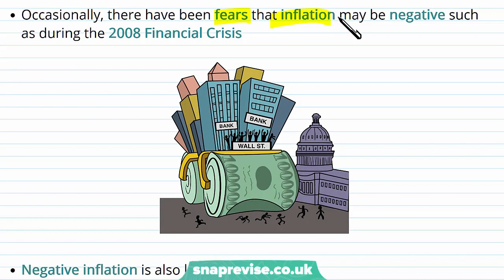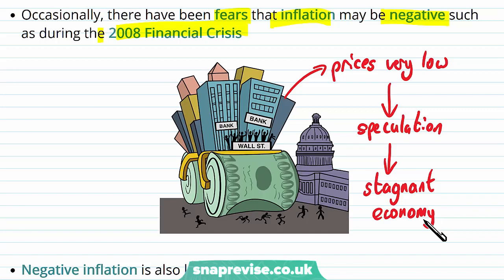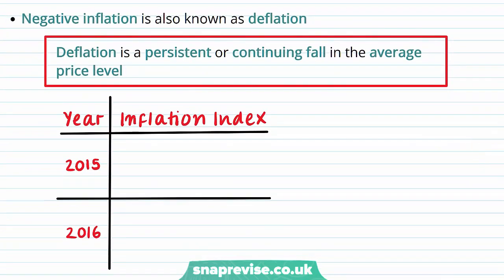Occasionally there are fears that inflation may become negative, as was the case during the 2008 financial crisis. Prices may become very low, leading to speculation of a stagnant economy — one that is not growing and shows little confidence in future economic growth. It shows very low levels of economic activity, and a representation of that is a negative inflation rate.